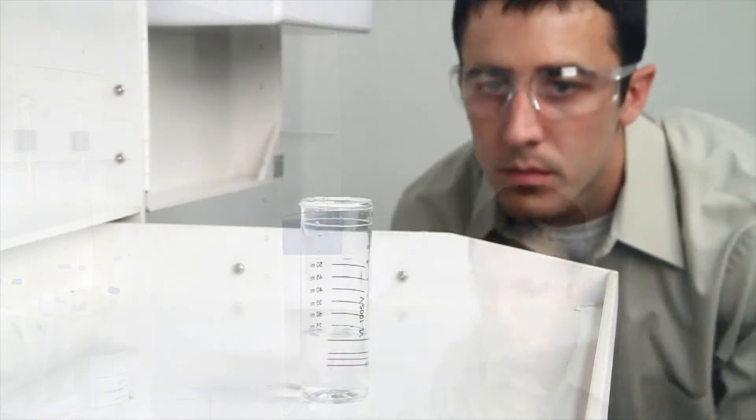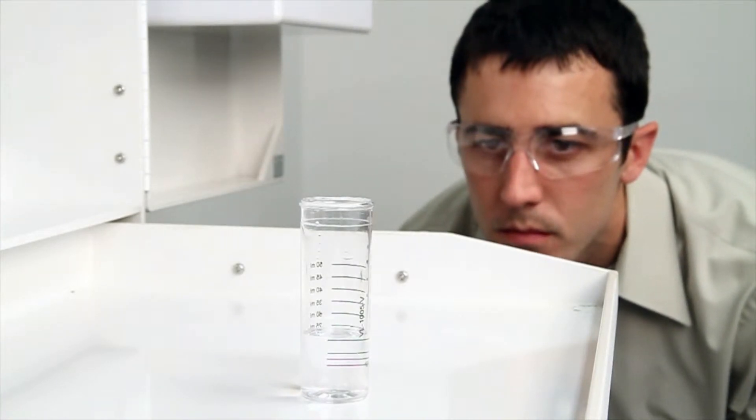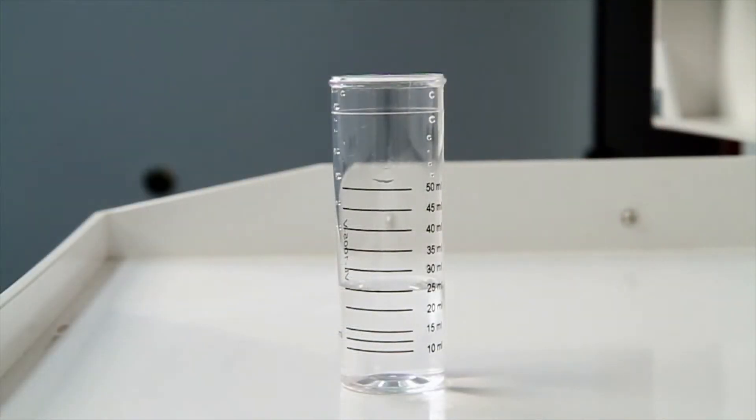When performing a drop count titration, a white background can provide contrast to better see the color changes. A cabinet tray or a white paper towel can provide that contrast.